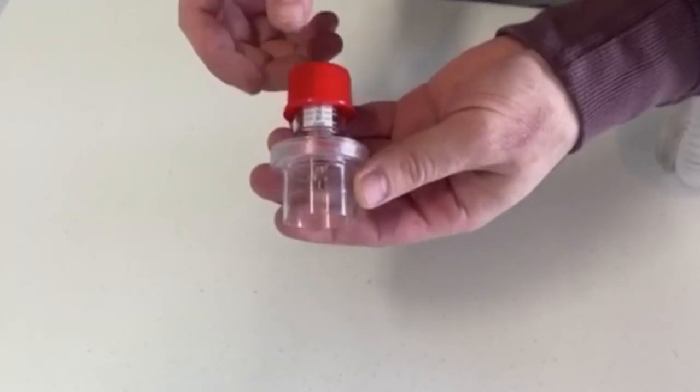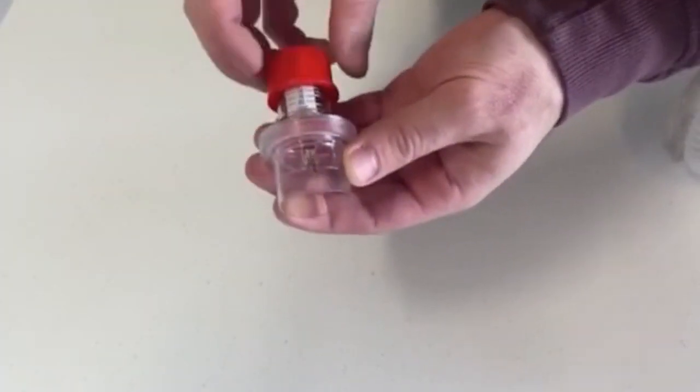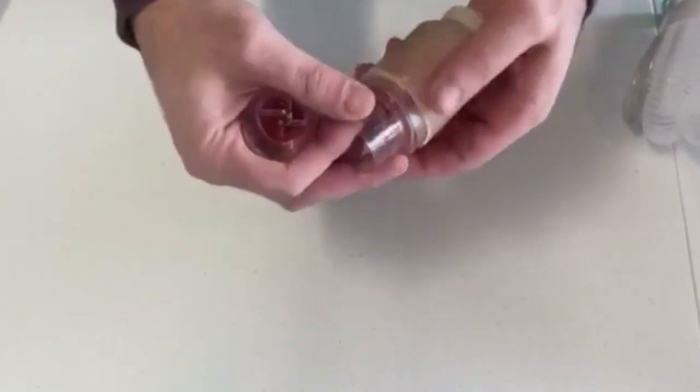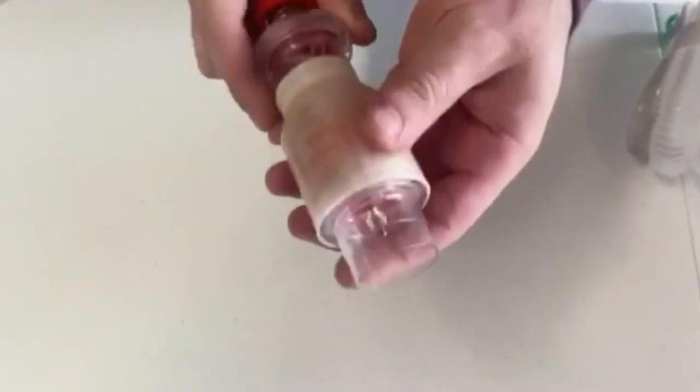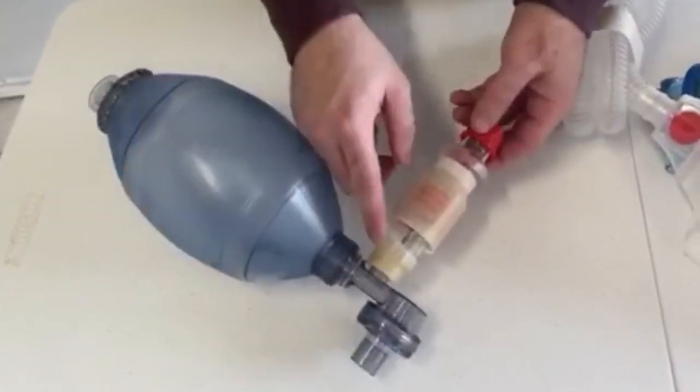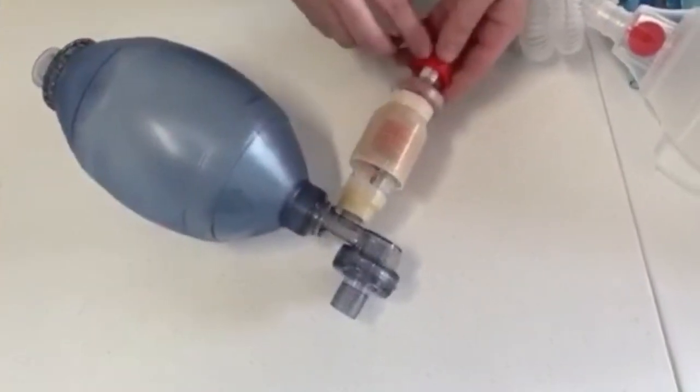This is an Ambu PEEP valve attachment and it goes up to 20 centimeters of water. Take two PEEP valves and stack them one on top of the other. Now the total adjustable pressure relief starts at 20 plus whatever number is here.